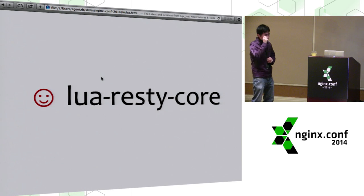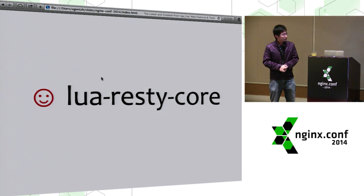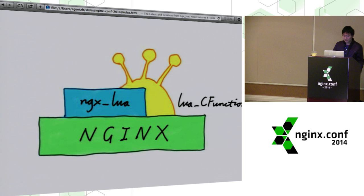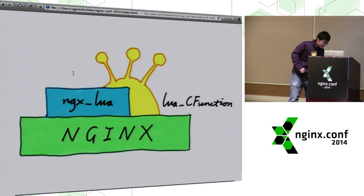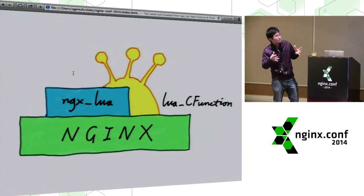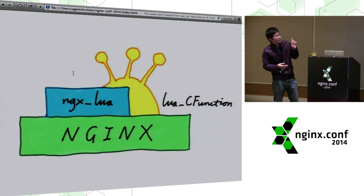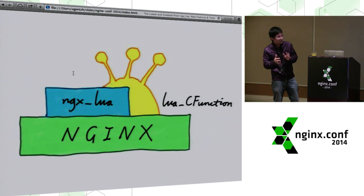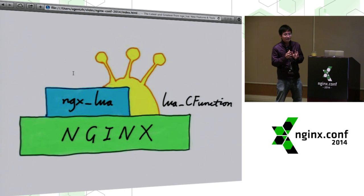Lua-resty-core is another Lua library I created at Cloudflare. NGX Lua provides a lot of Lua APIs, but these Lua APIs are based on the Lua C function mechanism. NGX is the base plate, NGX Lua is built on top of it, and NGX Lua tries to expose many NGX goodies via Lua APIs so that Lua programmers can script them on the fly. To expose this C API, NGX Lua uses the standard Lua C function mechanism from the standard Lua interpreter, which also works in LuaJIT but prevents just-in-time compilation.